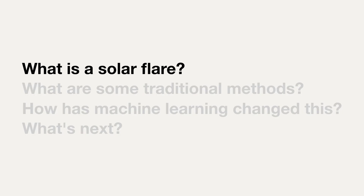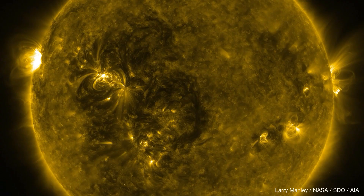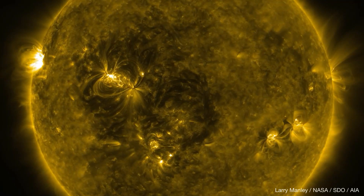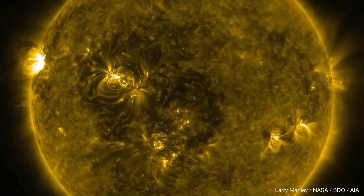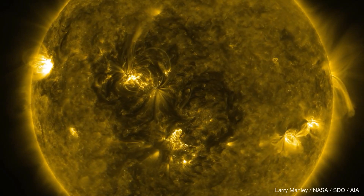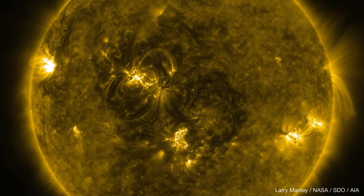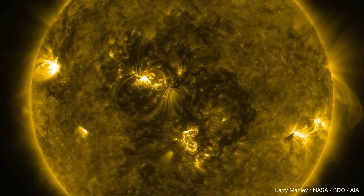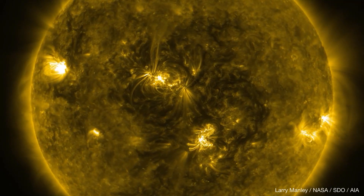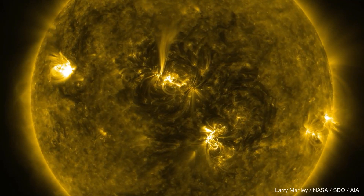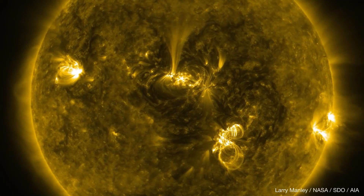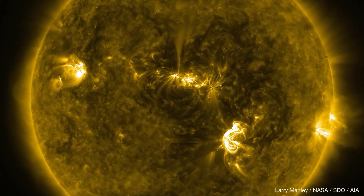So first, what is a solar flare? This is a movie of the largest flare in the last 15 years, on September 6, 2017. These images are taken by a NASA satellite called the Solar Dynamics Observatory, which takes ultra-HD images like this every few seconds, constantly.